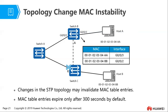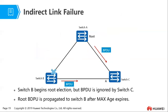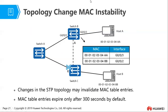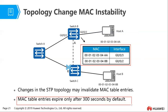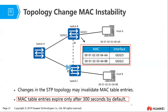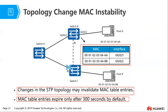By default, MAC address table entries remain valid for about 300 seconds — five minutes. But when we have a failure, this change can cause MAC address table instability, because stale entries may point to interfaces that are no longer valid.